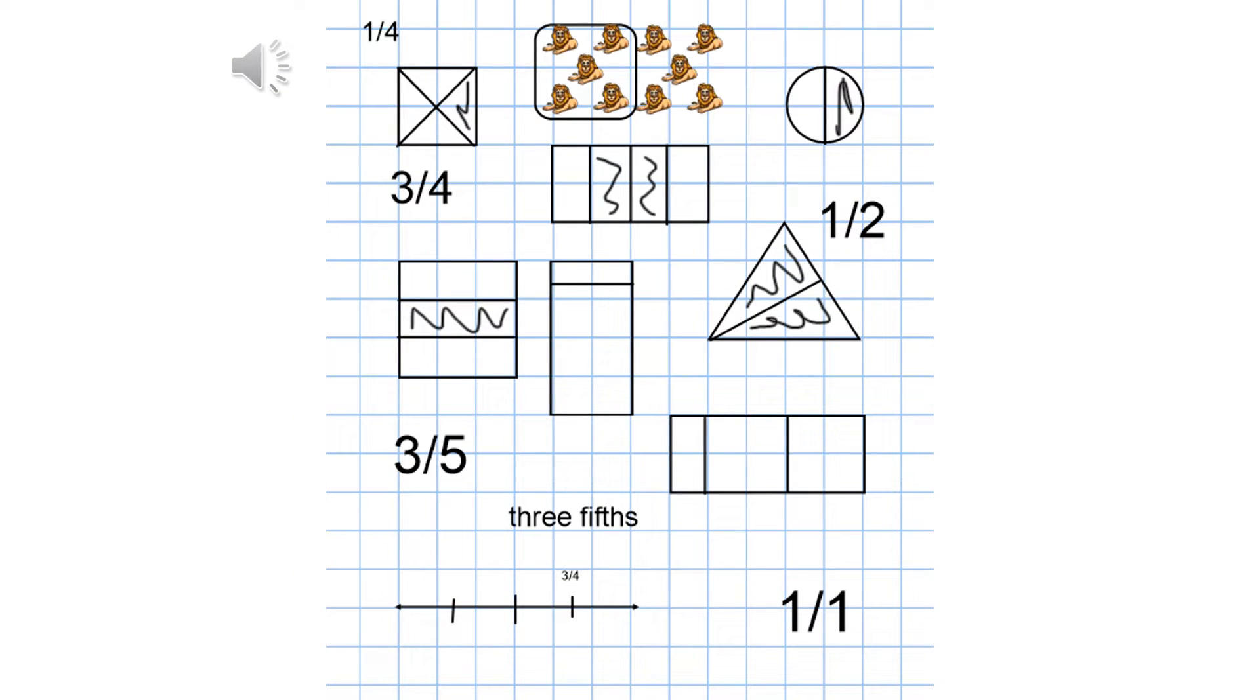All of these images represent fractions. A half is where a shape or a number has been split into two parts; both parts are equal. Quarters is where there are four equal parts, thirds three equal parts, fifths five equal parts, and so on and so forth.